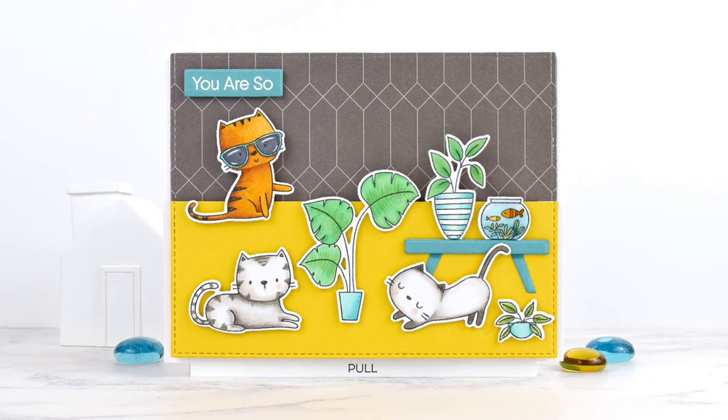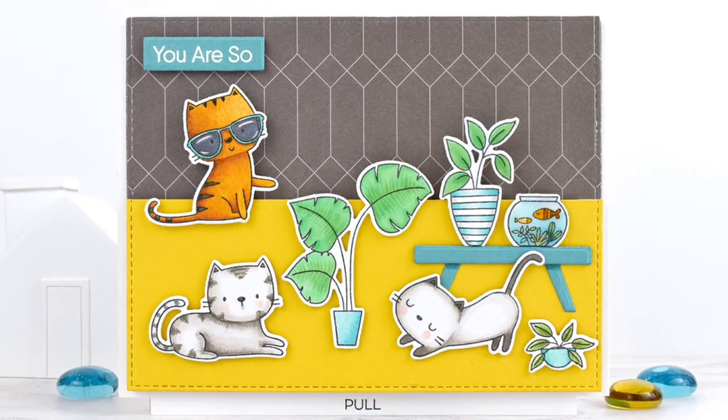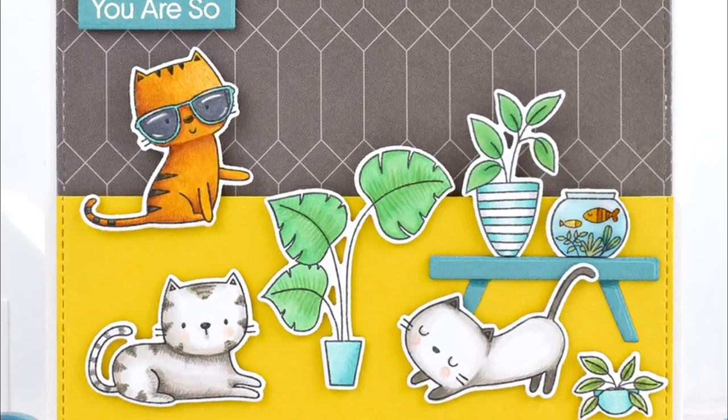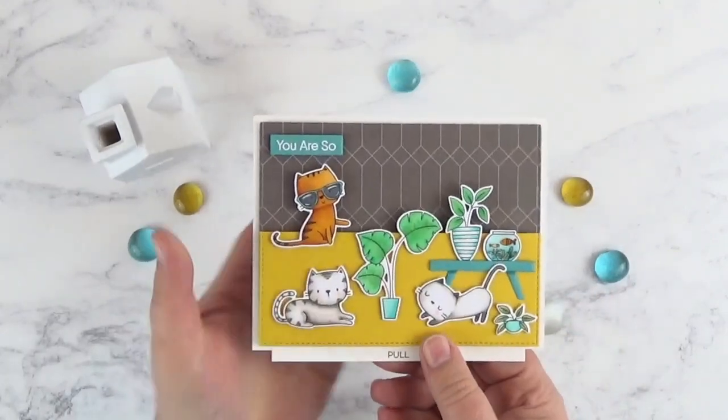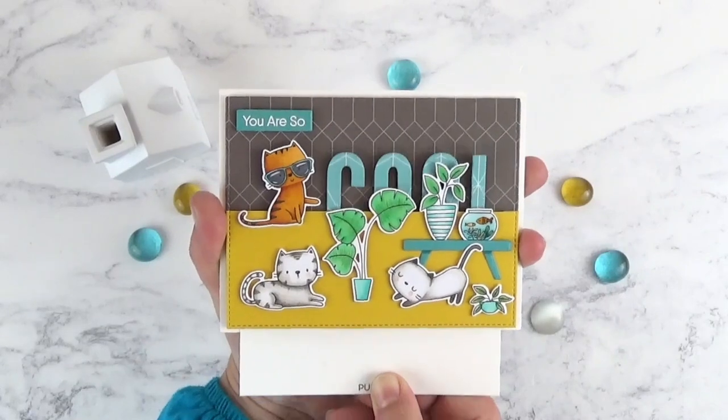Hello again, it's Laura Devalo here with another interactive card tutorial. This time I've used products mainly from the amazing March card kit to create a double slider card. When we pull the slider panel, a hidden word is revealed to complete the sentiment.